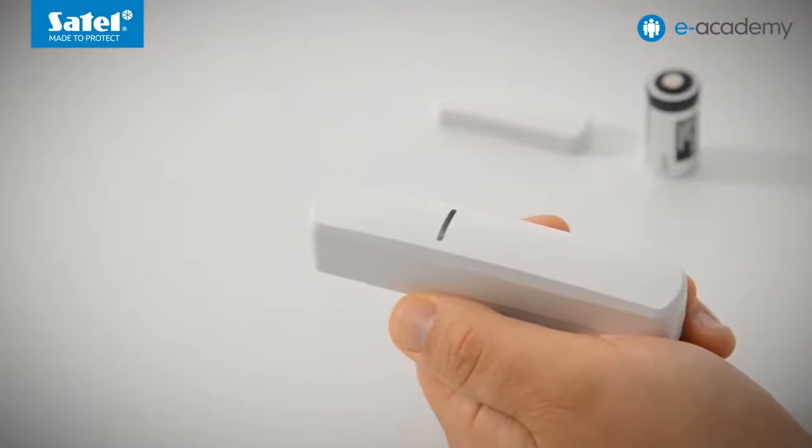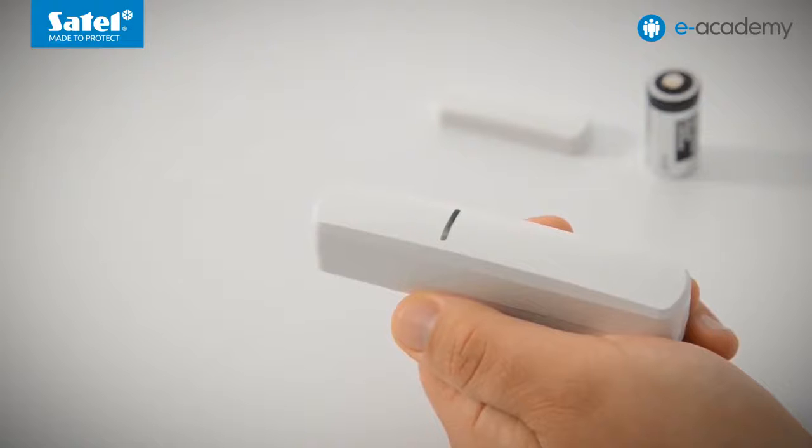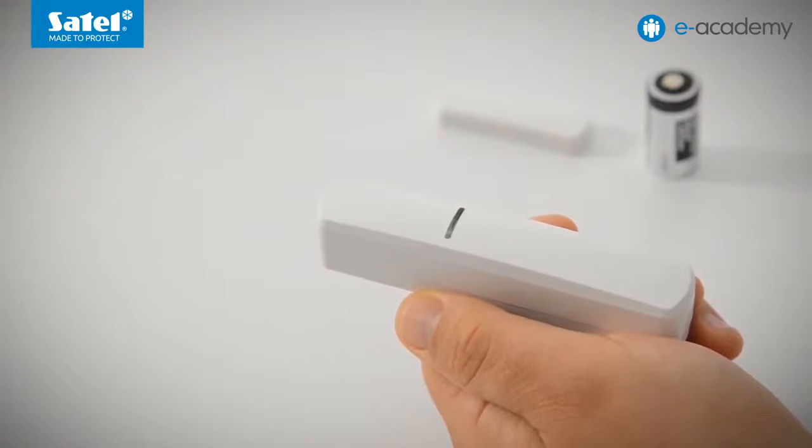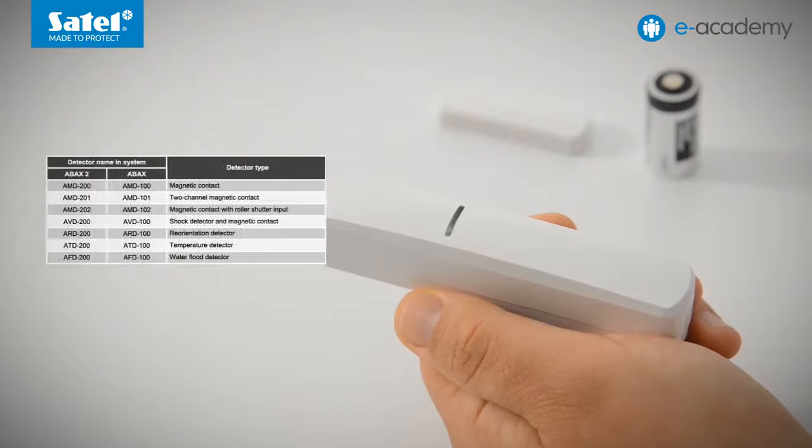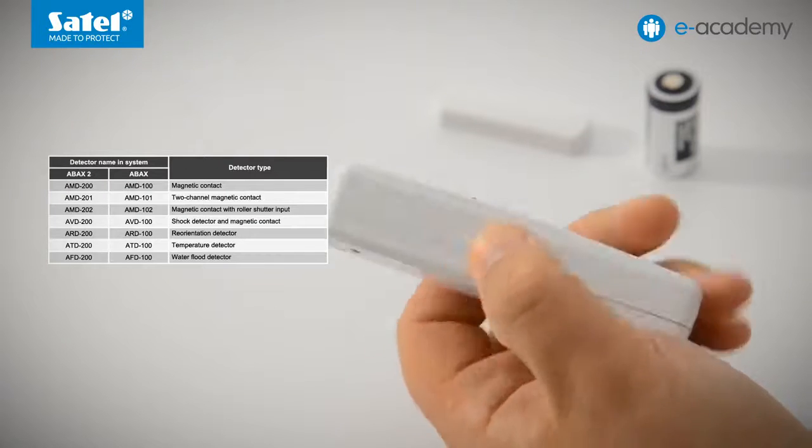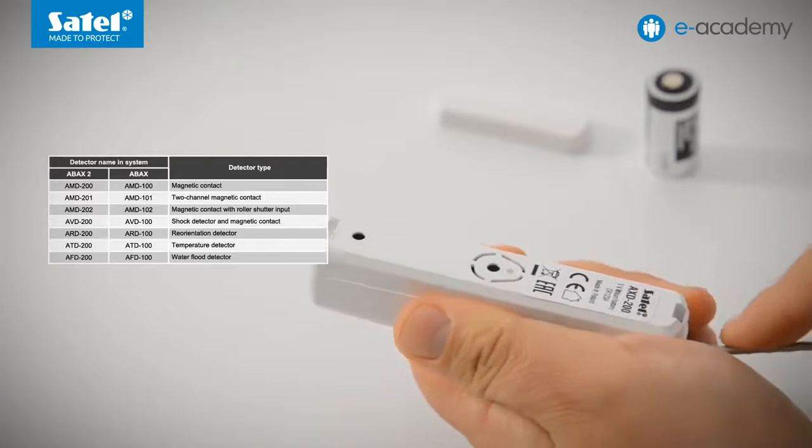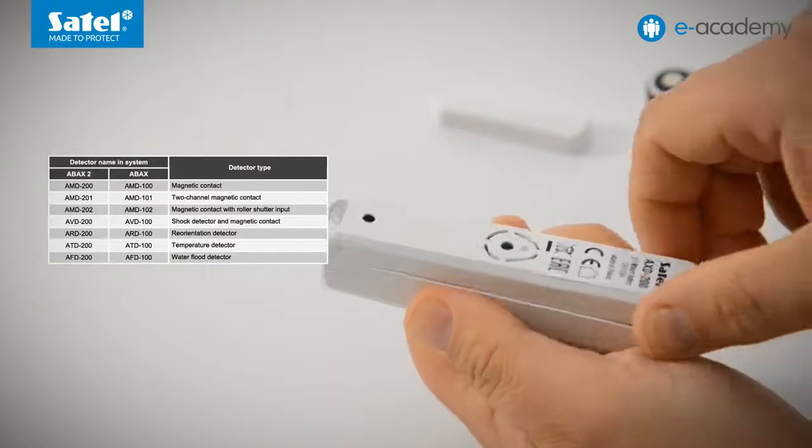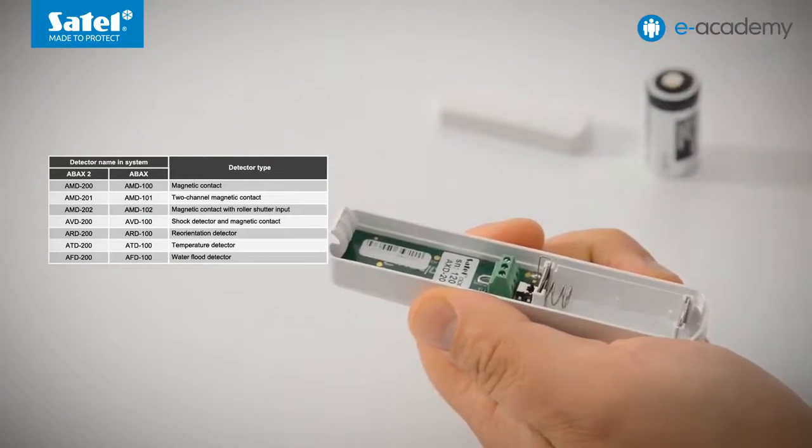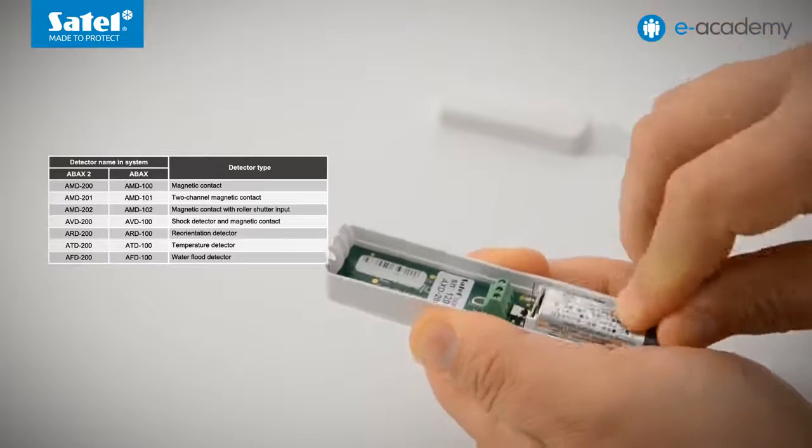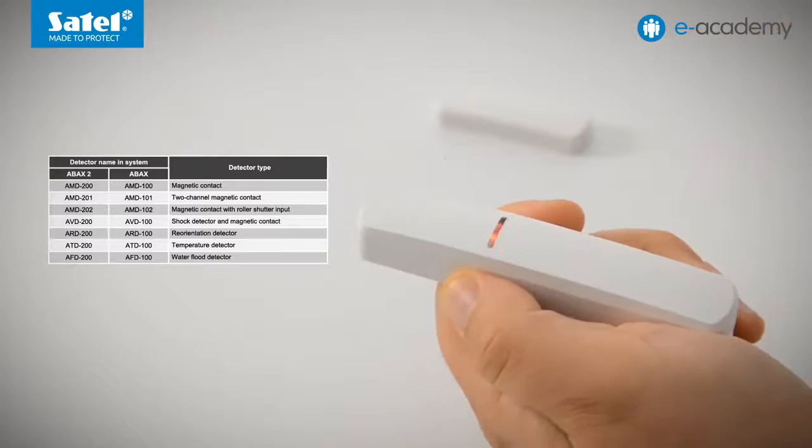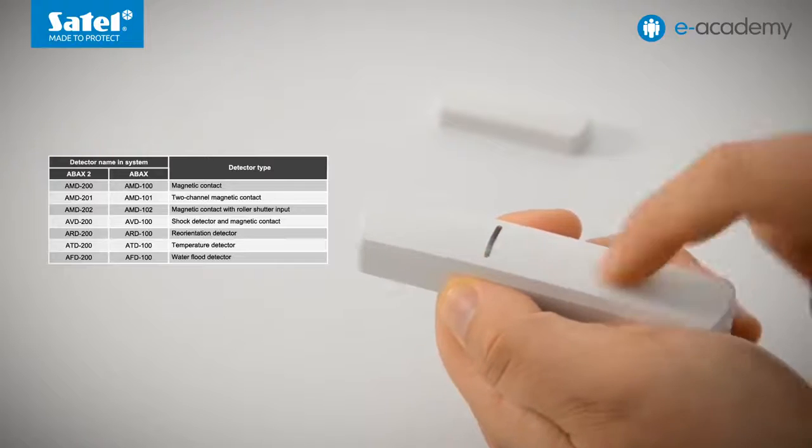The next device to be registered to the controller will be the AXD200 universal detector. However, first you must choose what role it will play in your system. In the previous episode, we said that the AXD200 detector can work in one of seven modes. Now I will show you how to choose the detector type. The first step is to open the detector enclosure and install the battery. The LED will blink rapidly. You have about 10 seconds to activate the detector selection mode. To turn it on, tap the enclosure three times.